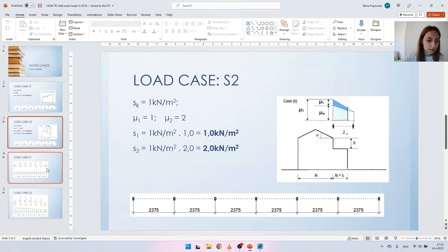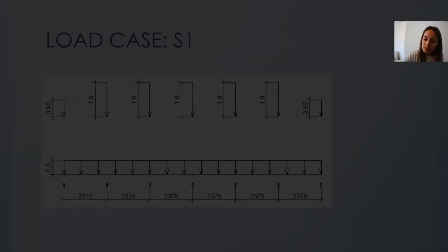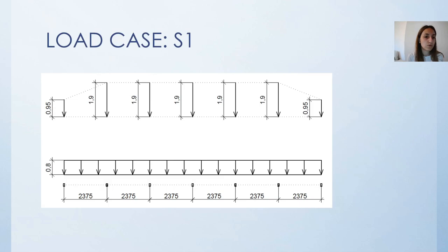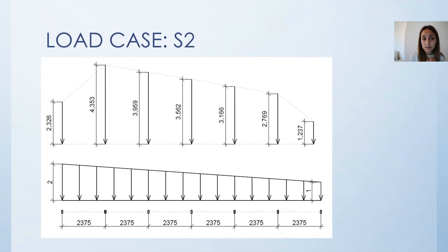Let's go back to the PowerPoint presentation to check if everything matches the manual calculation. From the manual calculation we expect the end purlins to take 0.95 kN/m while the ones in between take 1.9 kN/m, and you can see that the software distributed the loads correctly. Moving on to the next load case, this redistribution is more complex because we are working with a trapezoidal surface load, and although the purlins are spaced equally, each purlin will take a different value.